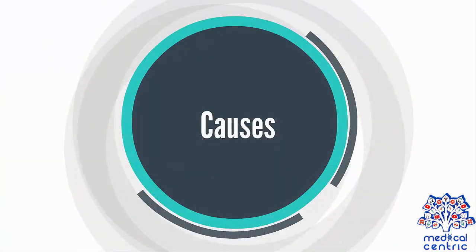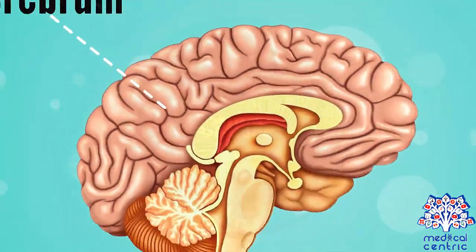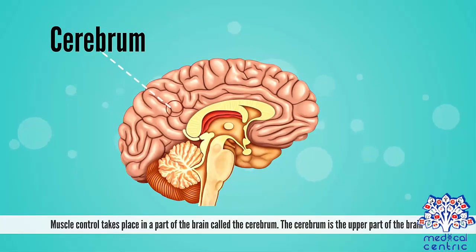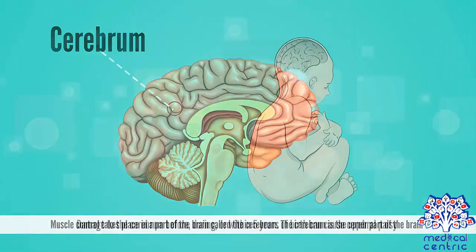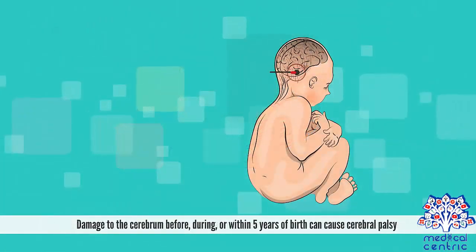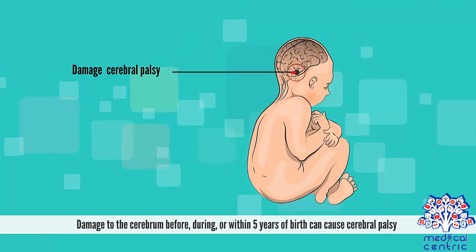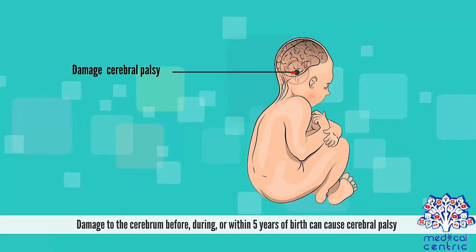Causes. Muscle control takes place in a part of the brain called the cerebrum. The cerebrum is the upper part of the brain. Damage to the cerebrum before, during, or within five years of birth can cause cerebral palsy.